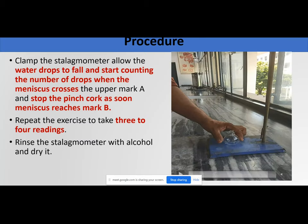Here is how this practical differs from the last one. Last time, we started collecting drops from mark A and collected until we had 20 drops in the gravity bottle. In this practical, you will count the number of drops from when the sample level is at mark A until it reaches mark B.